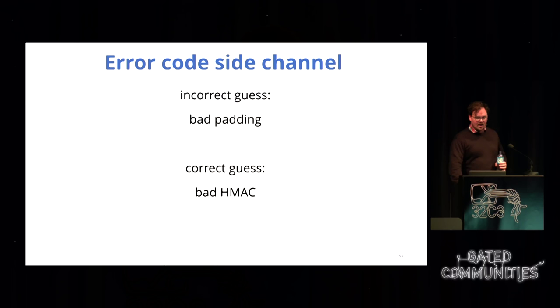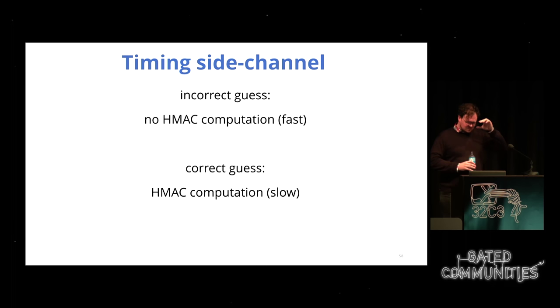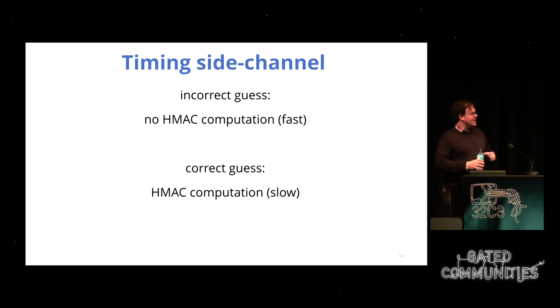This problem keeps coming back. There are many ways to have side channels. The error code side channel works: incorrect guess gives bad padding, correct guess gives bad HMAC. Later, Boneh and Brumley came up with a timing side channel — if you have an incorrect guess it's fast because you're not doing the HMAC, and it's slow if you actually get the padding correctly. So you just look at how long it takes the server to do the computation, and you have another padding oracle. You might have to try a couple extra times to get rid of timing jitter, but this lets you decrypt entire messages — in the context of HTTP, your entire cookie or password.